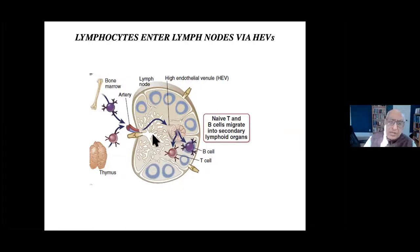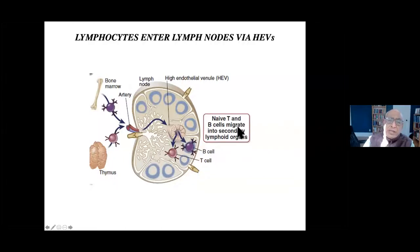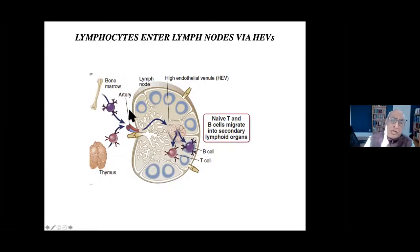Naive cells come into the lymph node through the high endothelial venule, brought in by chemokines. Naive B and T cells keep coming here, and this is where all initial immune activation will occur. Naive cells do not migrate to tissues - they come to lymph nodes. The antigen is brought to the lymph node and activates the naive B and T cell in the lymph node, spleen, or Peyer's patches in a secondary lymphoid organ.